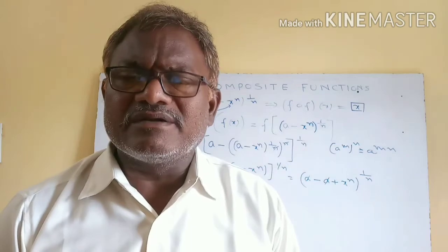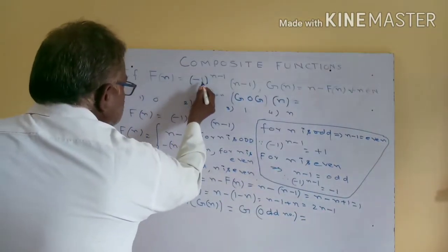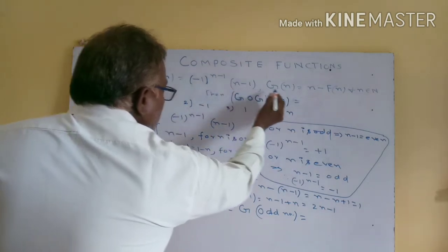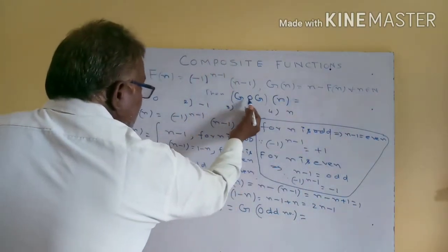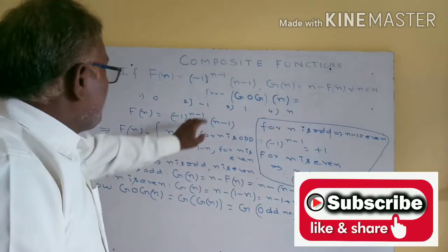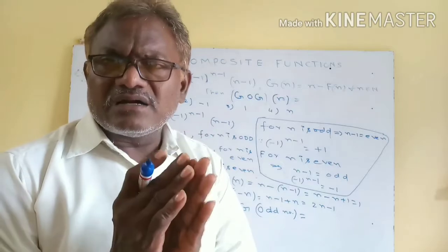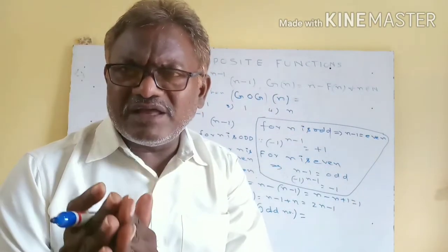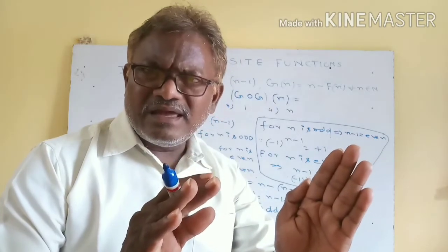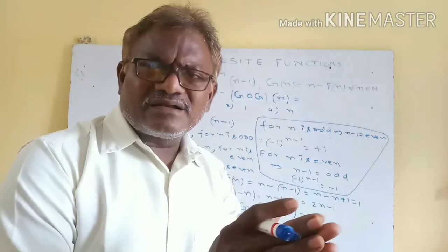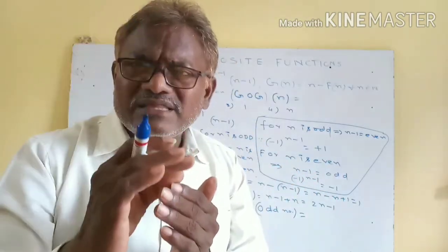For these types of problems: if f(n) is equal to (-1) whole power (n minus 1) into (n minus 1), and g(n) is equal to n minus f(n) for all n belongs to natural numbers, then g circle g(n) is equal to... Now remember: (-1) whole power (n minus 1). Suppose n is odd, n minus 1 is even. Suppose n is even, n minus 1 is odd.